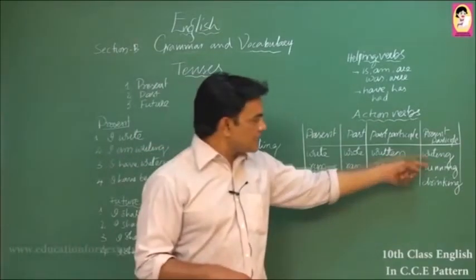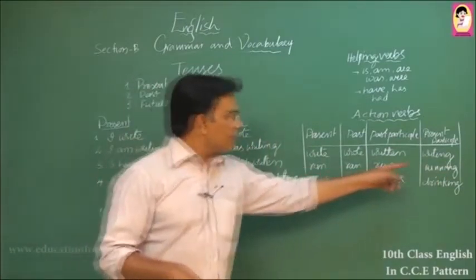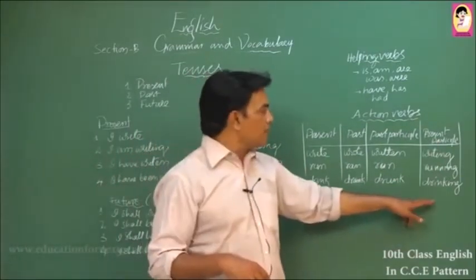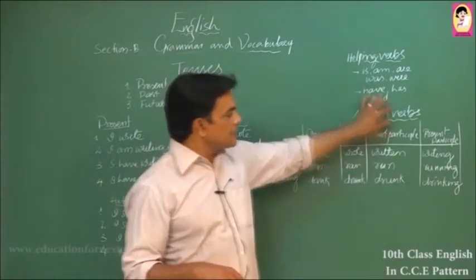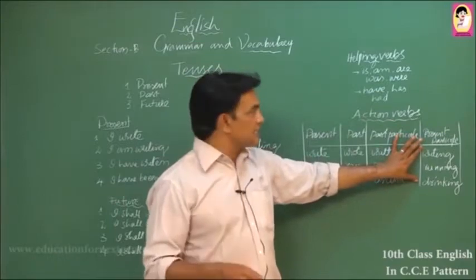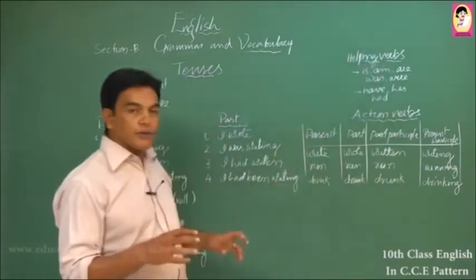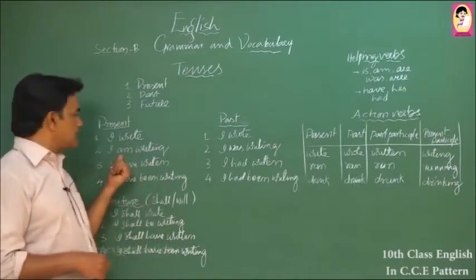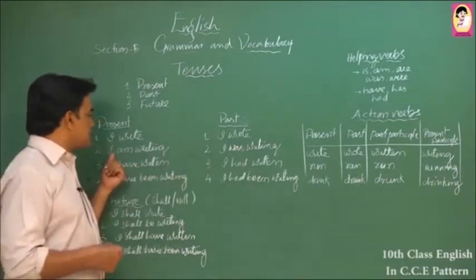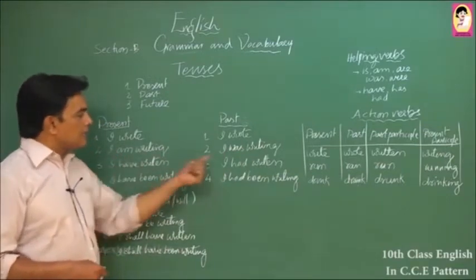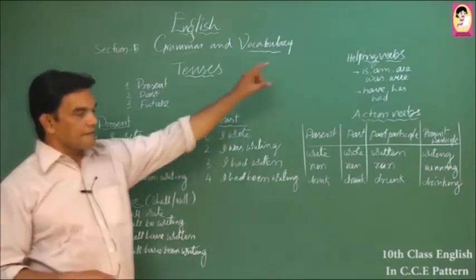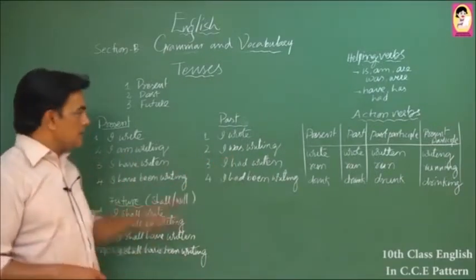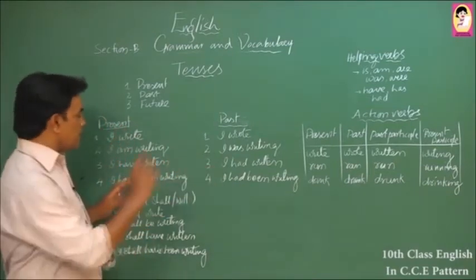If we use 'had written,' that becomes the past perfect. Now for V4, the present participle — you add '-ing' to the verb, giving 'writing.' To use the '-ing' form in a sentence, we need the helping verbs is, am, are (present) or was, were (past). For example, 'I am writing' is present continuous, and 'I was writing' is past continuous.